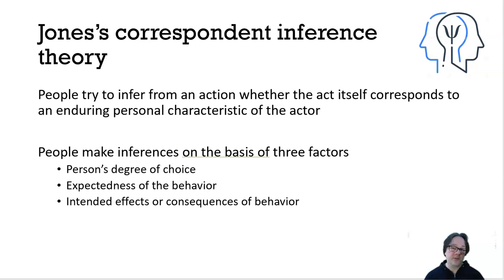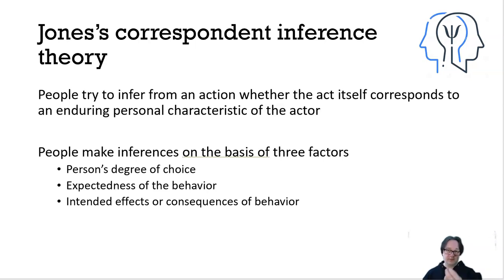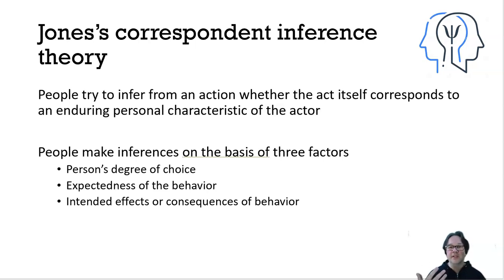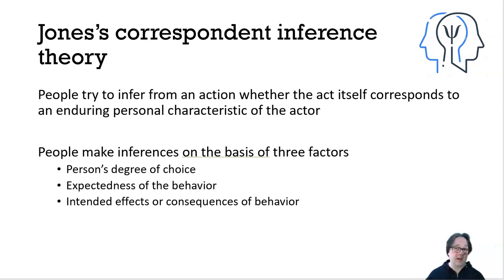Jones's correspondence inference theory: a correspondence inference is an attribution where we try to see whether a person's behavior corresponds to some inference we can make about their personality. People try to infer from an action whether the act corresponds to some dispositional trait of the person. According to this theory, we make this dispositional inference based on three factors: the person's degree of choice — how much choice do they have in how they're behaving?